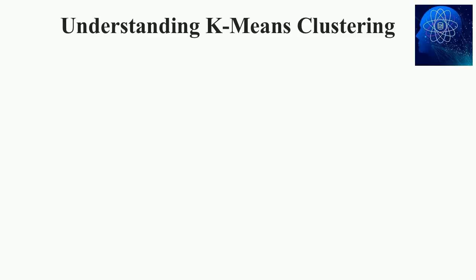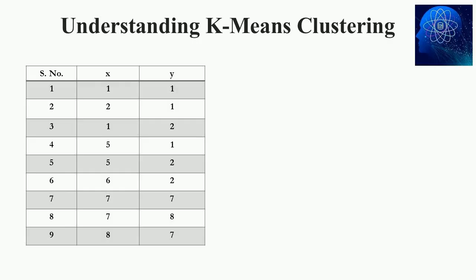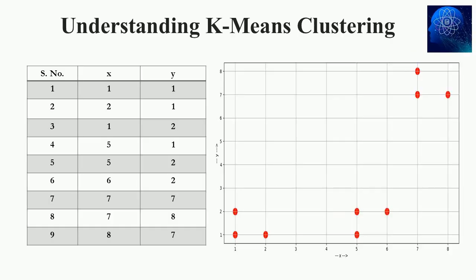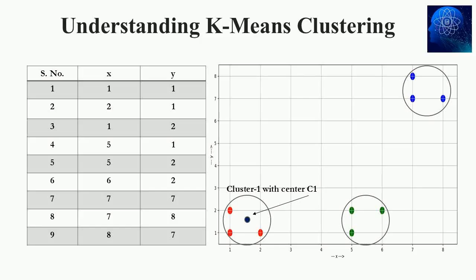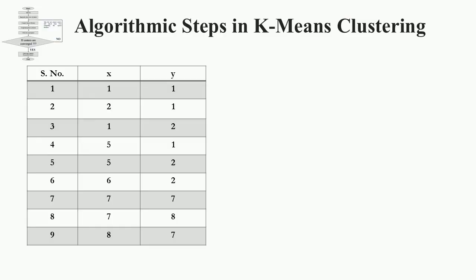Now, let's work out K-means clustering using a numerical example. A dataset containing X and Y columns is taken here. The dataset is represented in graphical form using a scatter plot. As can be seen, there are three clusters marked as red, green, and blue colors — let's call them cluster C1, C2, and C3, with centers C1, C2, and C3 respectively. Let's achieve this clustering using the algorithmic steps in K-means clustering.